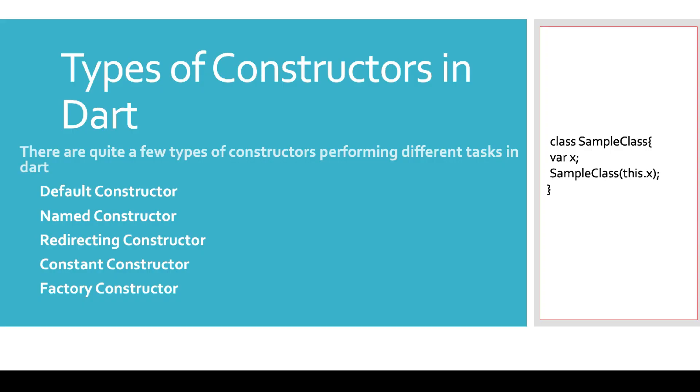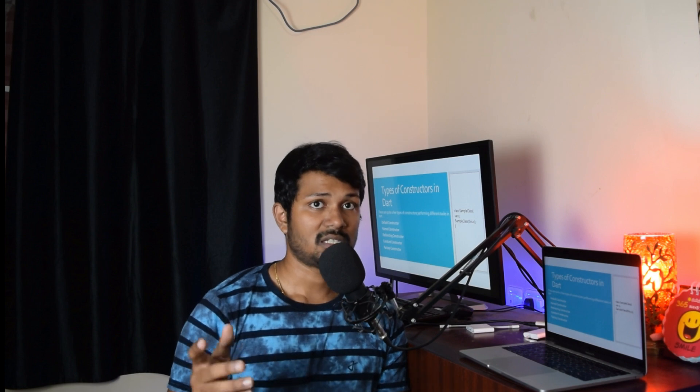That's it for this video. Remember, I'll be talking about the constant constructor and the factory constructor after we cover abstract classes and factory classes in upcoming videos. To summarize: we learned about constructors, a very important concept in Dart. We covered three types — default, named, and redirecting constructors. Make sure to take notes, and there's a PDF link in the description to grab the course materials. Stay tuned for the next videos — until then, peace out, have a super awesome day!